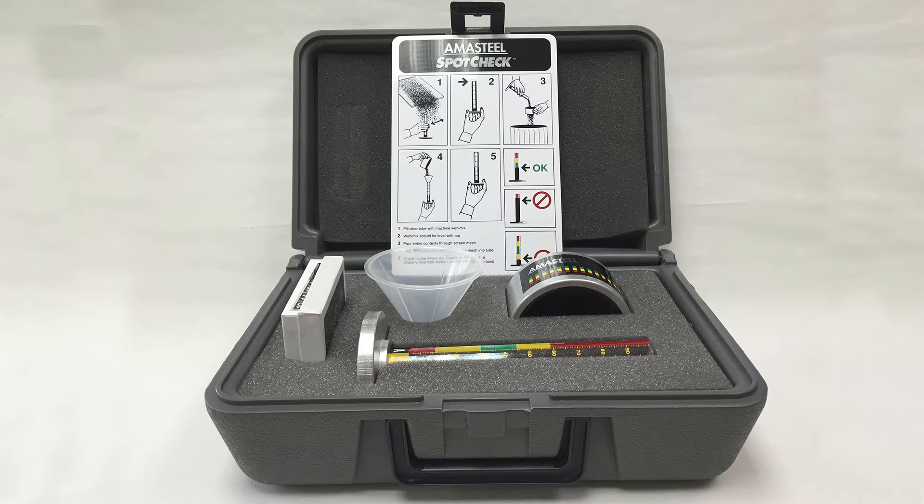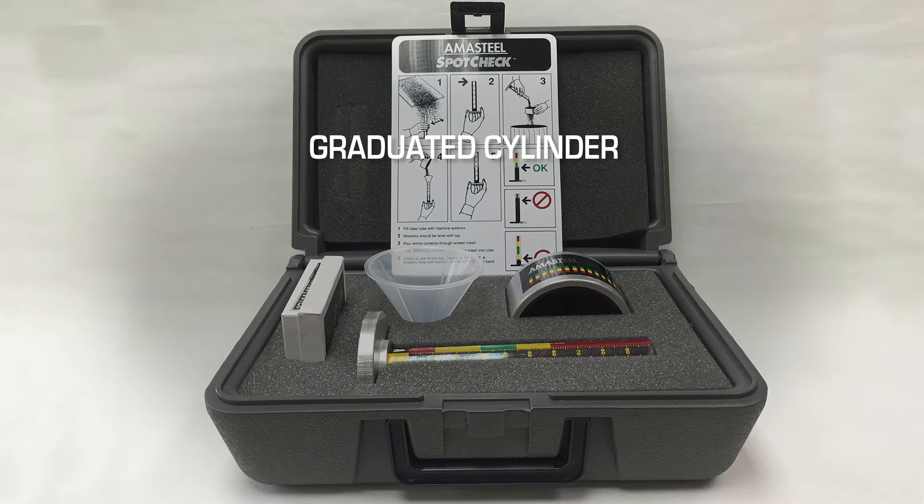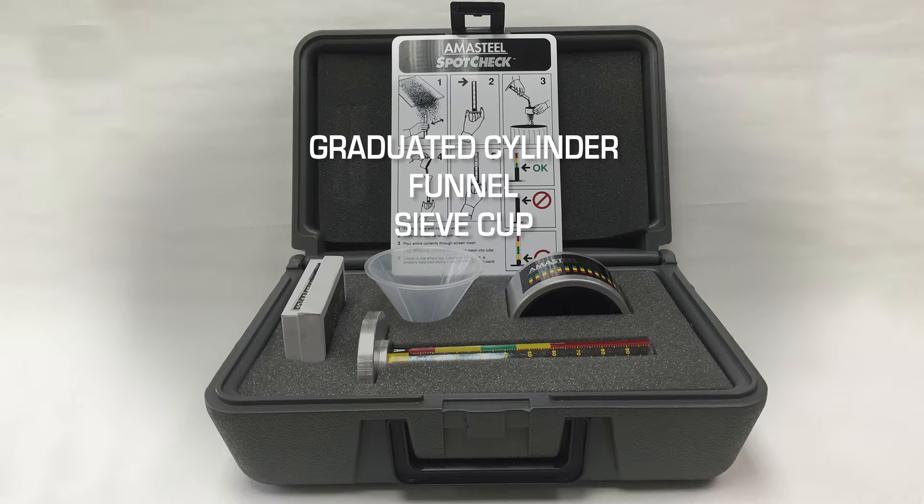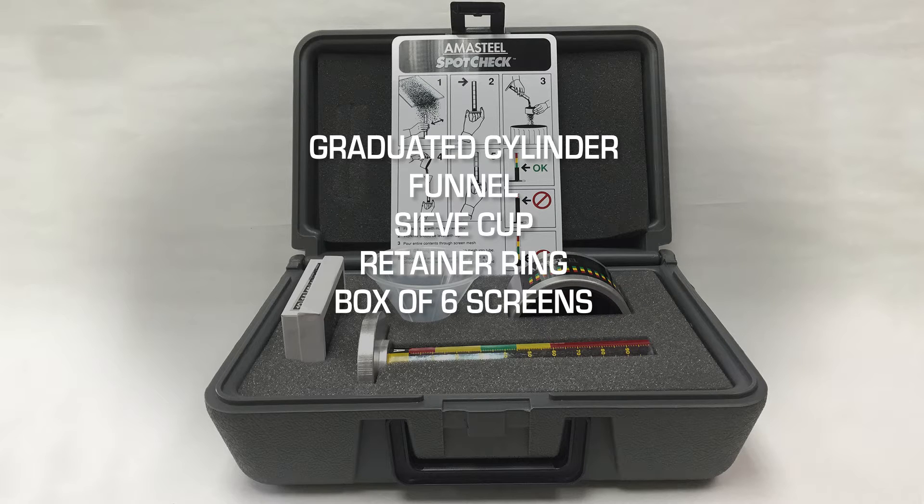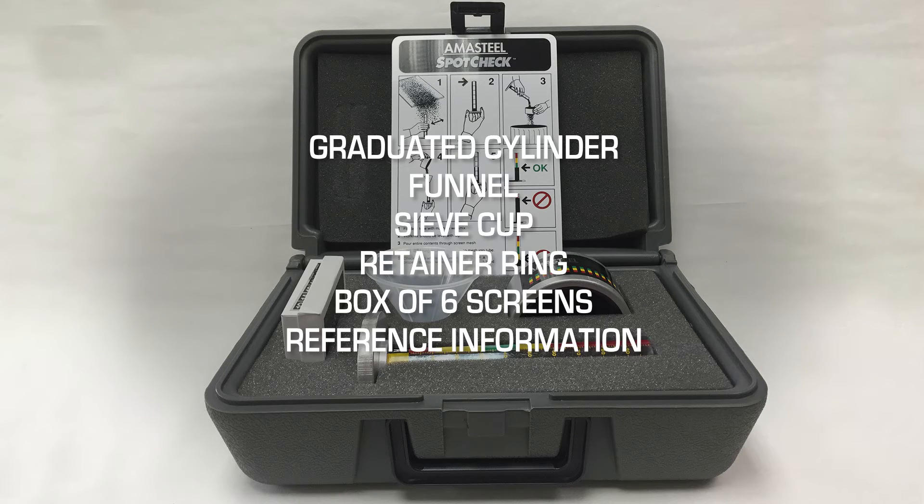Items in your kit include graduated cylinder, funnel, sieve cup, retainer ring, box of six screens with numerical and color codes, reference information, and instructions.